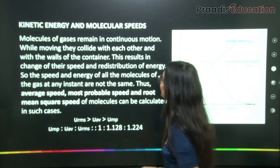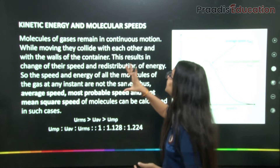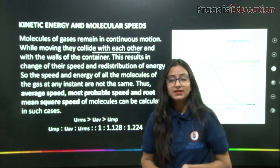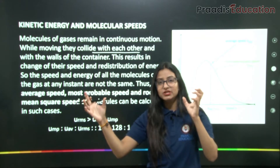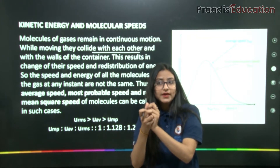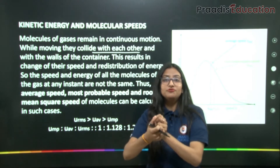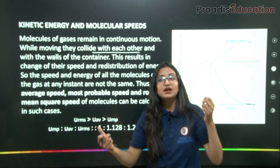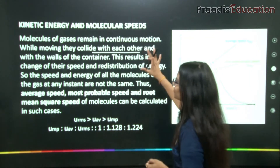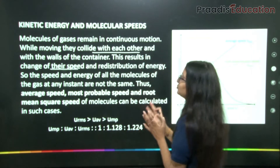Molecules of gas remain in continuous motion. While moving, they collide with each other and with the walls of the container. Upon collision, energy exchange occurs — their energies change from what they were before. They then move apart again and collide with the container walls. This results in a change of their speeds and redistribution of energy.